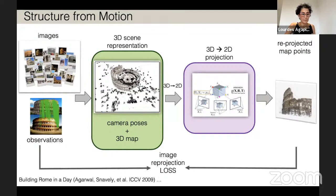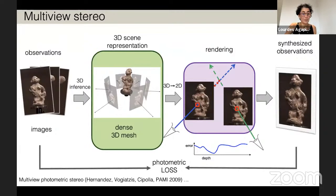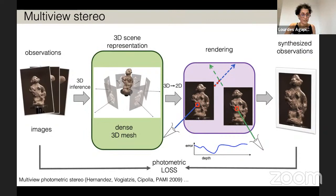Another example is multi-view stereo. Here the observations are the images themselves, and the problem we want to solve is: can we reconstruct a dense 3D mesh, such that when we render it back onto the images, we synthesize back our observation? It's this analysis by synthesis way of solving the problem. We use a photometric loss to guide the estimation of depth of each point, such that when we render back we see the original images. There are no 3D annotations here either.